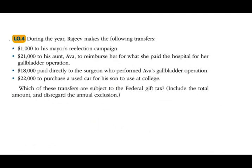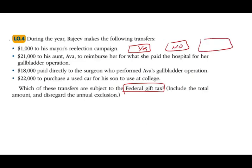Let's take a look at the first question — the first simulation — and let me tell you how I'm going to take this and turn it into a simulation. During the year, Rajiv makes the following transfers, and the question is: which of these transfers are subject to the federal gift tax? On the exam, rather than giving you a statement like '$1,000 to his mayor's re-election campaign,' they can show you an exhibit with a canceled check of $1,000 payable to the mayor, with 're-election campaign' in the memo. They're giving you the same information in a different format, so they can ask you the question in more than one way.